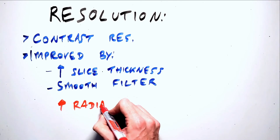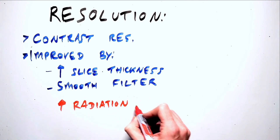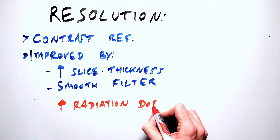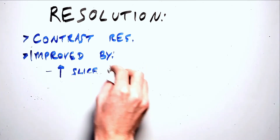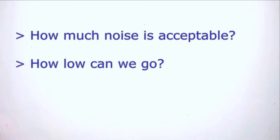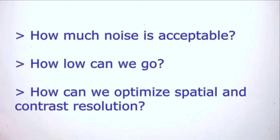Increasing our radiation dose is the simplest way to improve our image quality. However, the obvious cost of that increase in radiation dose is the risk to the patient. At the end of the road on the image quality discussion, we basically have: how much noise are we willing to tolerate? How low can we go on the radiation dose without sacrificing too much image quality to noise? And how can we optimize our spatial and contrast resolution within the constraints of minimizing dose? We'll discuss this in more depth in the video on dose, including other techniques like iterative reconstruction, which can help improve our image quality without increasing radiation dose.